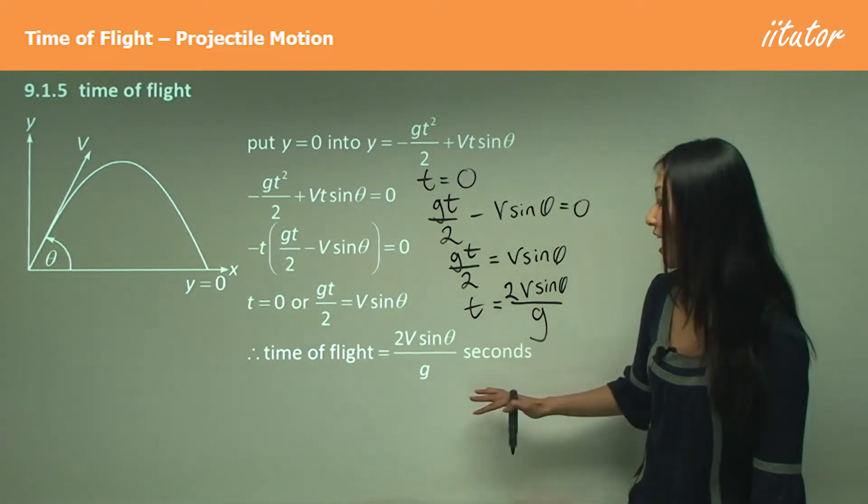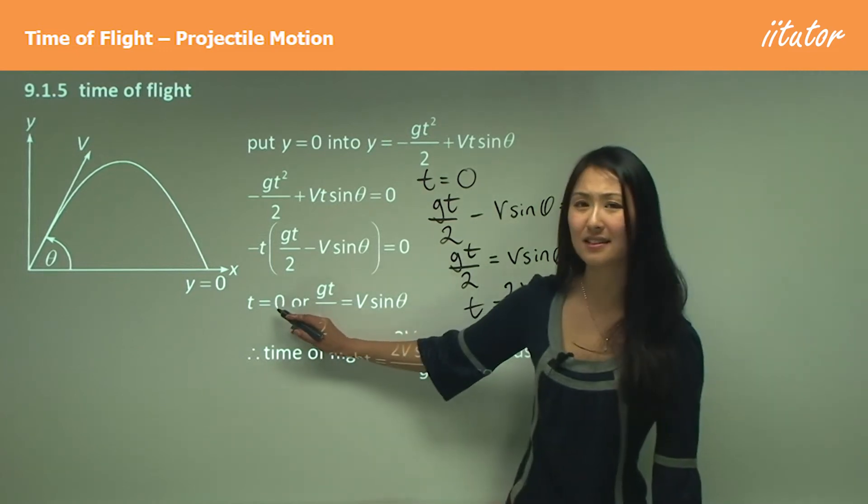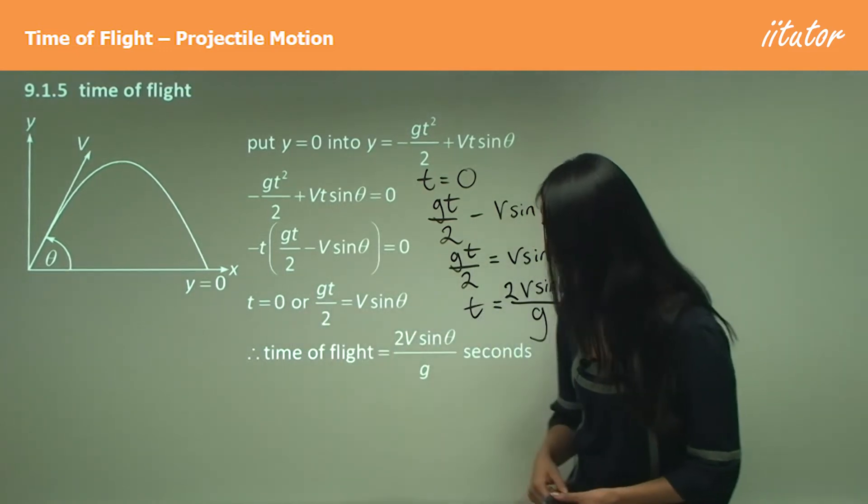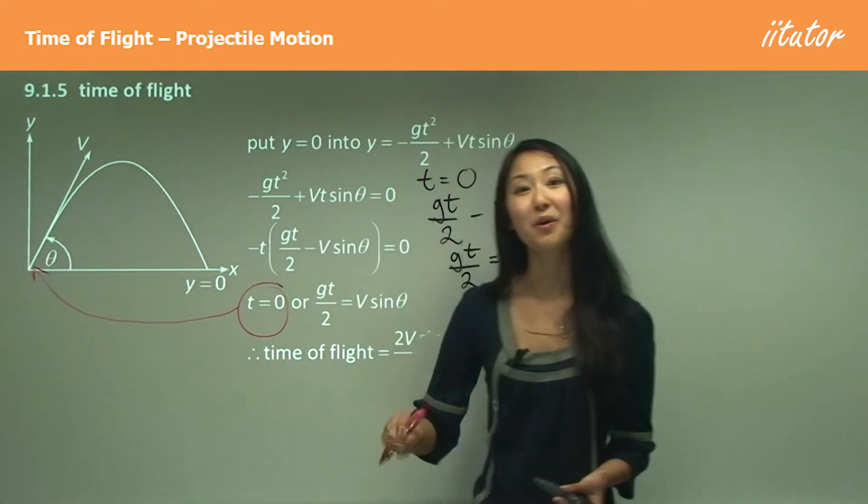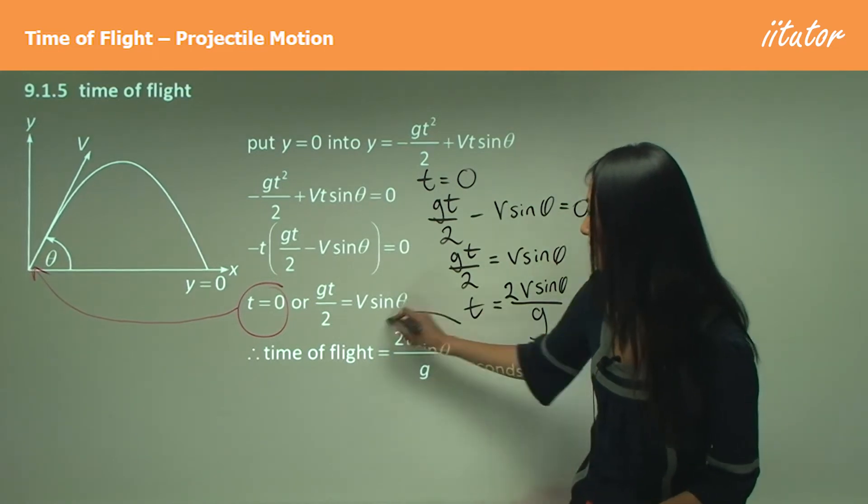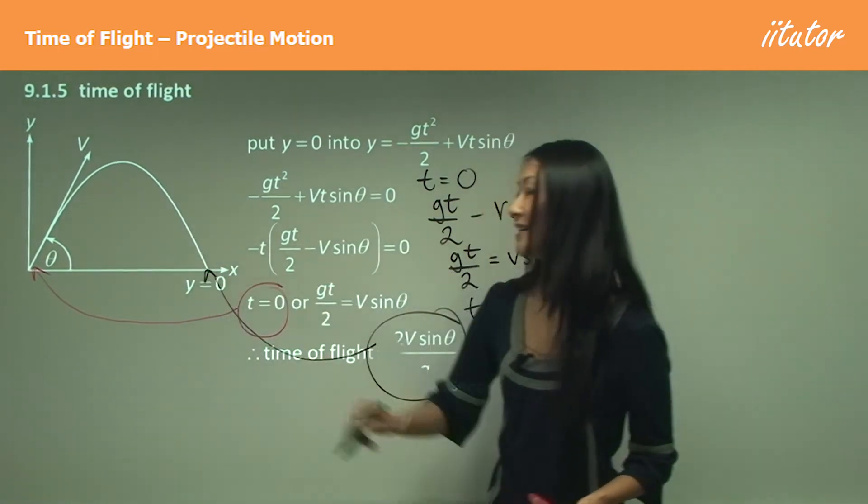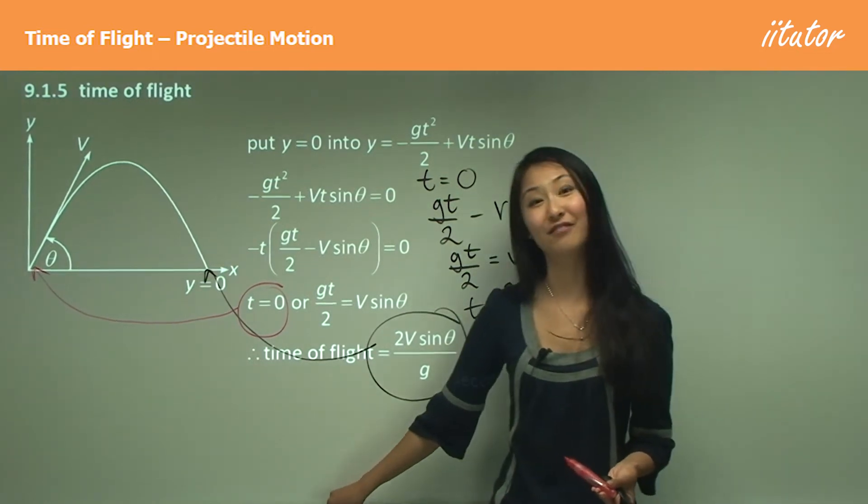That's what our time of flight is represented by. And then you ask, well why isn't it that t equals zero? Well, this t equals zero here represents our initial starting value, where that object is starting off from, whereas this represents where it's ending. That's why this here represents the time of flight.